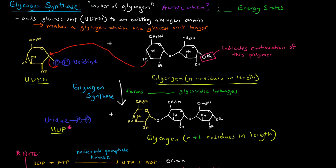When would it be active? Well, we mentioned earlier that we would want it to be active during high energy states, because glycogen synthase is storing glucose as glycogen. So we want it to only store glucose when we already have plenty of it around, when we have plenty of energy, high energy states.